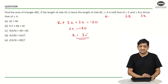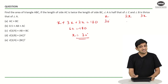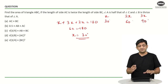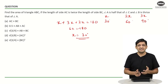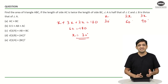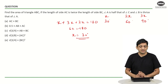Because x equals 30 degrees, angle A is 30 degrees, angle C is 60 degrees, and angle B is 90 degrees. Once we figure out it is a 30-60-90 triangle, we know that the side opposite to 30 degrees is half the length of the hypotenuse, and the side opposite to 60 degrees is root 3 over 2 times the hypotenuse.